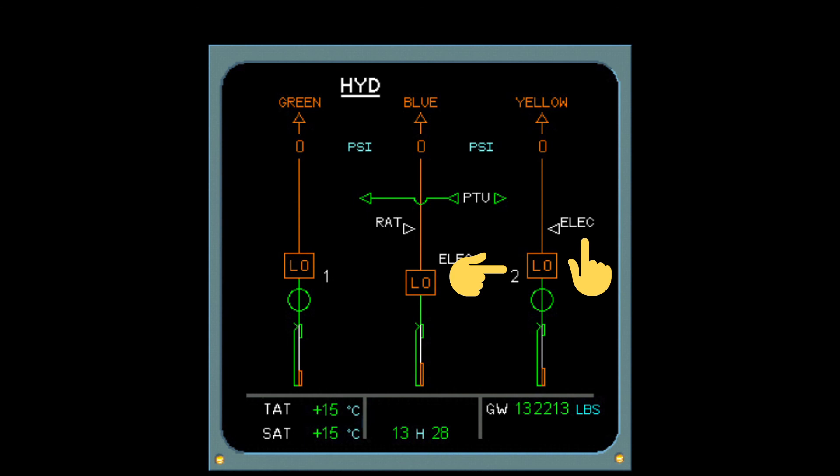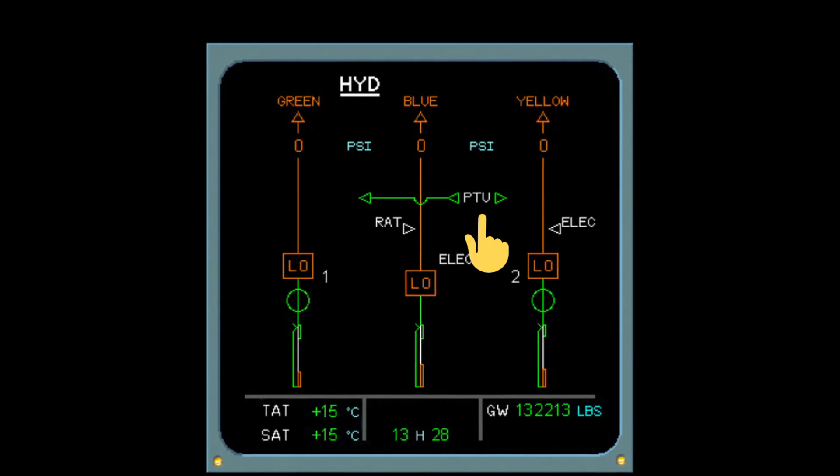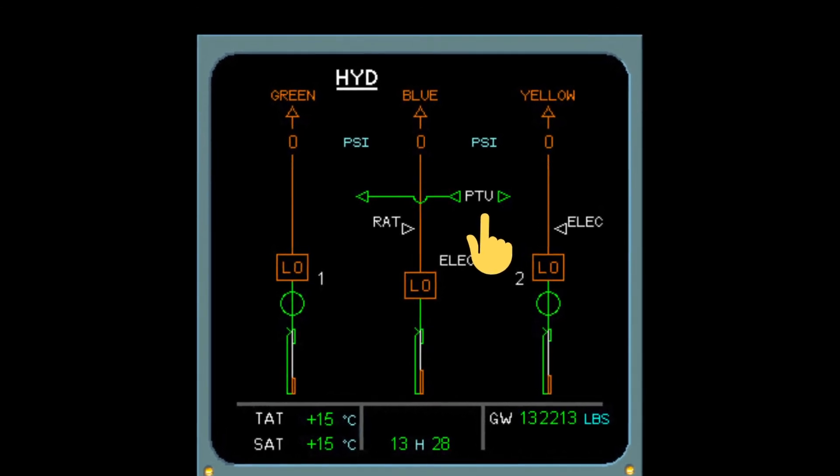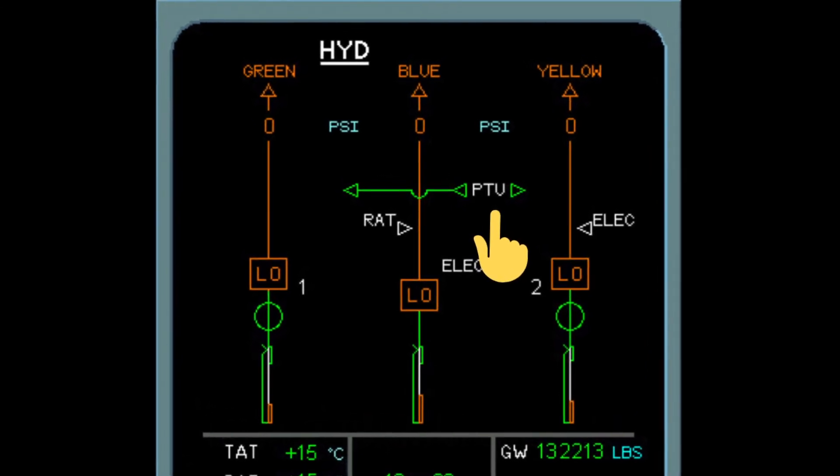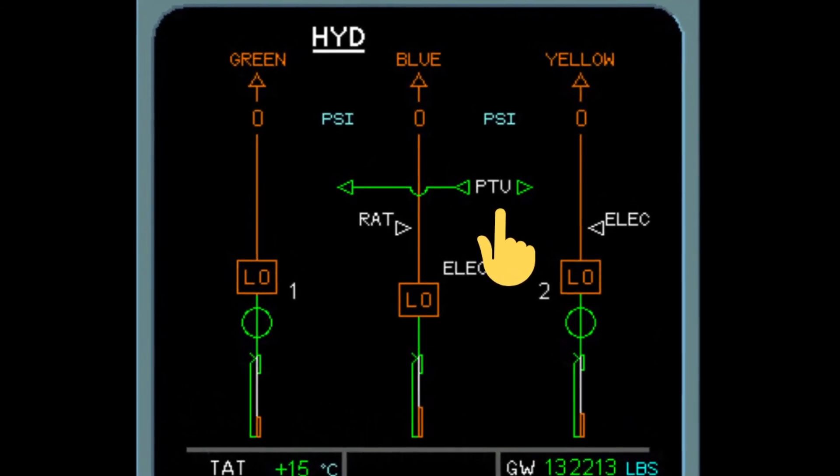Moving up, you can see that hydraulic pressure in each line is 0 PSI right now. You can also see the PTU. The green color represents that the PTU button is in auto position and available, however since the conditions for the PTU operation are not satisfied right now, the PTU is disconnected.